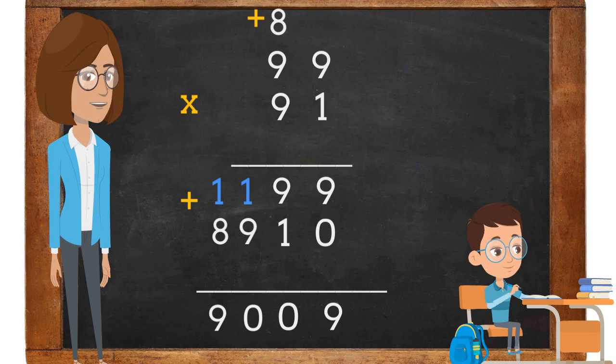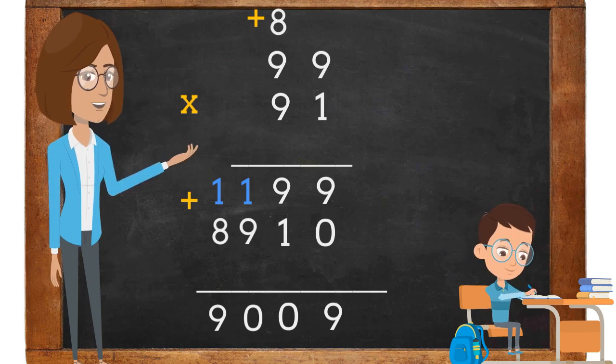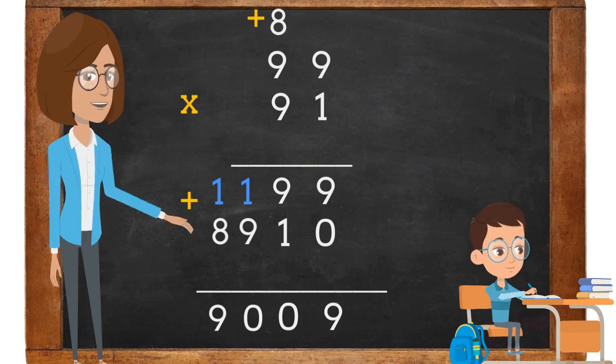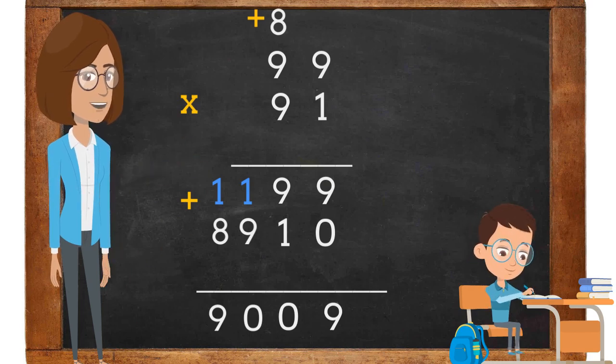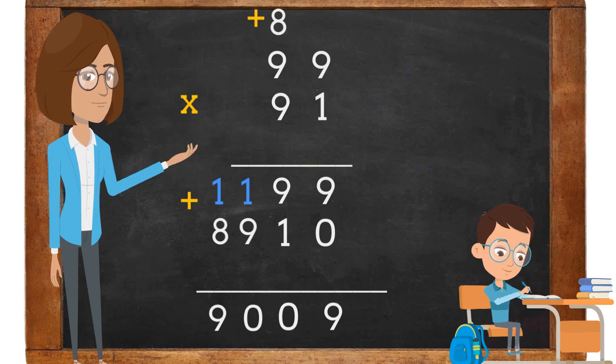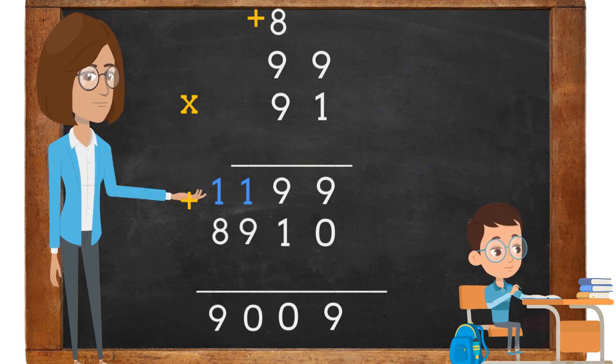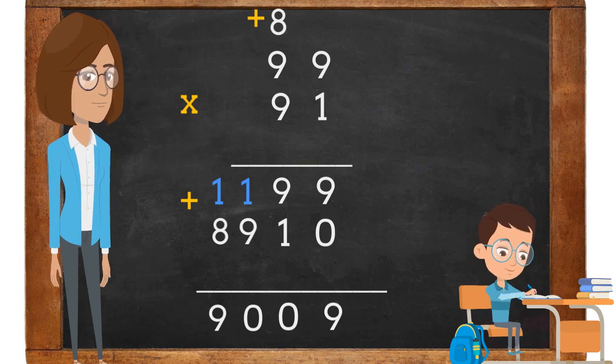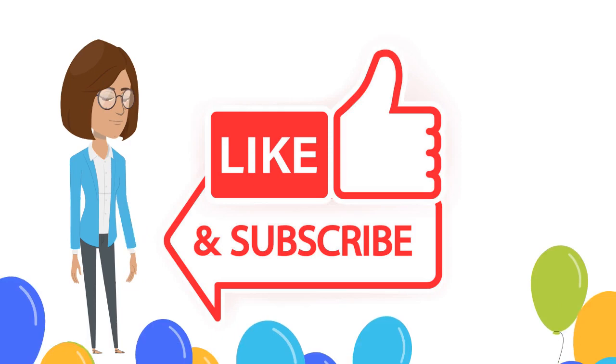Next, we need to add: 9 plus 0 is 9. 9 plus 1 is 10 — the 0 is placed in the tens place and the 1 is carried above the 9 in the hundreds place. 9 plus 1 is 10 — the 0 is placed in the hundreds place and the 1 is carried above the 8 in the thousands place. 8 plus 1 is 9. The answer is 9,009.